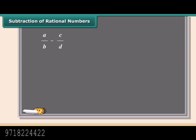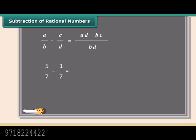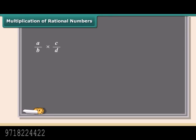This fraction can be further simplified to 3 by 2. Subtraction of rational numbers is the same as addition. Before subtracting, always look for the common denominator. If it's not common, multiply both parts of each number by the bottom part of the other. Here is an example: we will subtract 1 by 7 from 5 by 7. The denominators are already the same, so subtract the numerators and put the answer over the same denominator.